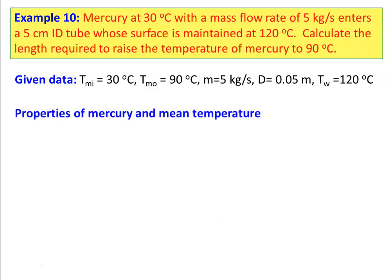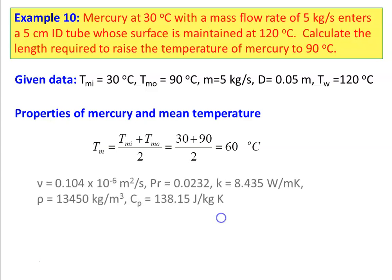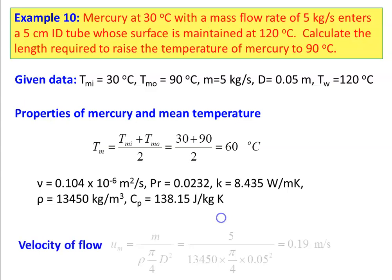Properties of Mercury at mean temperature Tm = (30 + 90)/2 = 60°C: kinematic viscosity = 0.104 × 10⁻⁶ m²/s, Prandtl number = 0.0232, thermal conductivity = 8.435 W/m·K, density = 13,450 kg/m³, specific heat = 138.15 J/kg·K. The velocity: Um = m / (ρ × π/4 × D²) = 5 / (13,450 × π/4 × 0.05²) = 0.19 m/s.